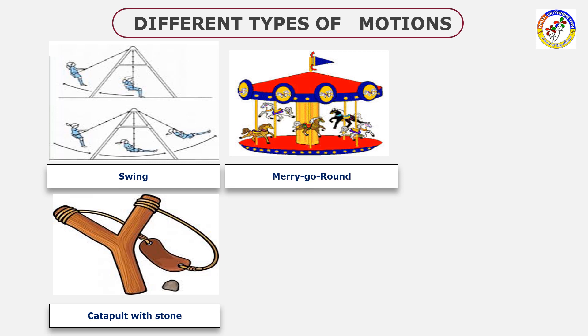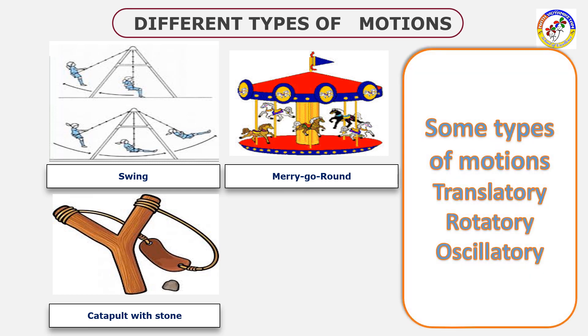There are different types of motion: translatory motion, rotatory motion, oscillatory motion. We'll discuss these in depth.